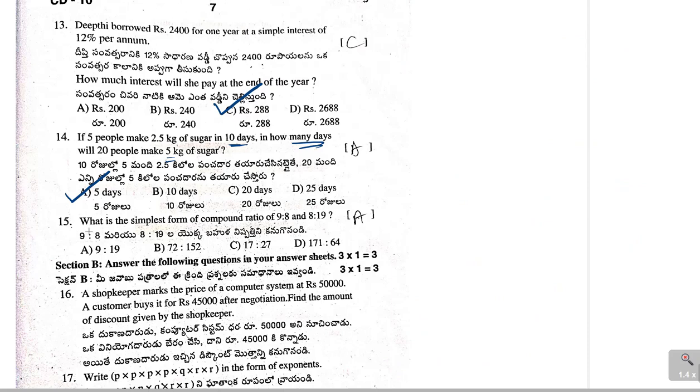Next problem. What is the simplest form of the compound ratio of 9 is to 8 and 8 is to 19? 9 is to 8, 8 is to 19. Compound ratio means, 9 into 8 is to 8 into 19. 8, 8 gets cancelled, so 9 is to 19, that is the answer. So, option A is correct.